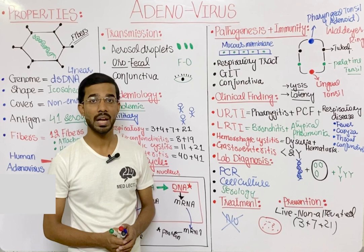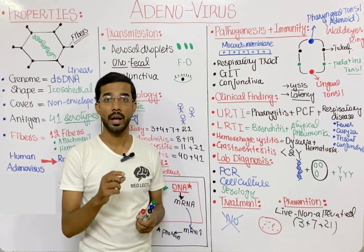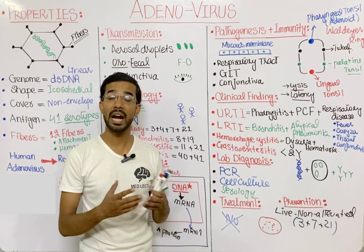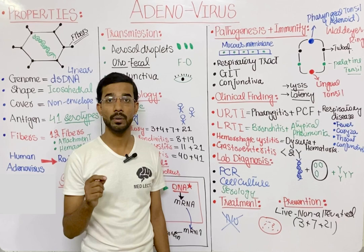Prevention also includes hygiene. For example, when a doctor checks a patient's eye and then another patient comes, hand washing between patients prevents transmission of adenovirus from one person to another through medical staff. Unhygienic conditions can facilitate spread of adenovirus.